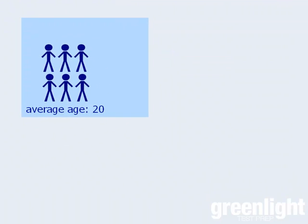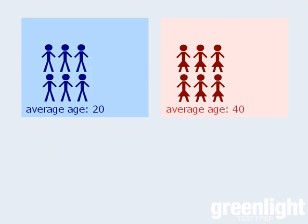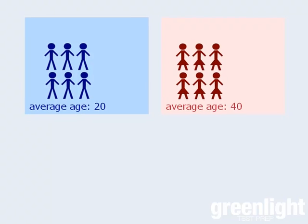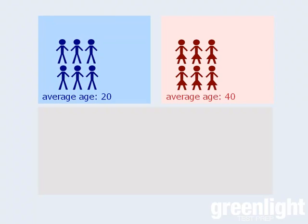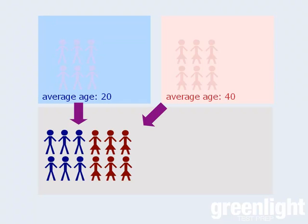Let's say we have 6 men and their average age is 20, and we have 6 women and their average age is 40. Now what happens if we combine these two groups? What will be the average age of the combined population?